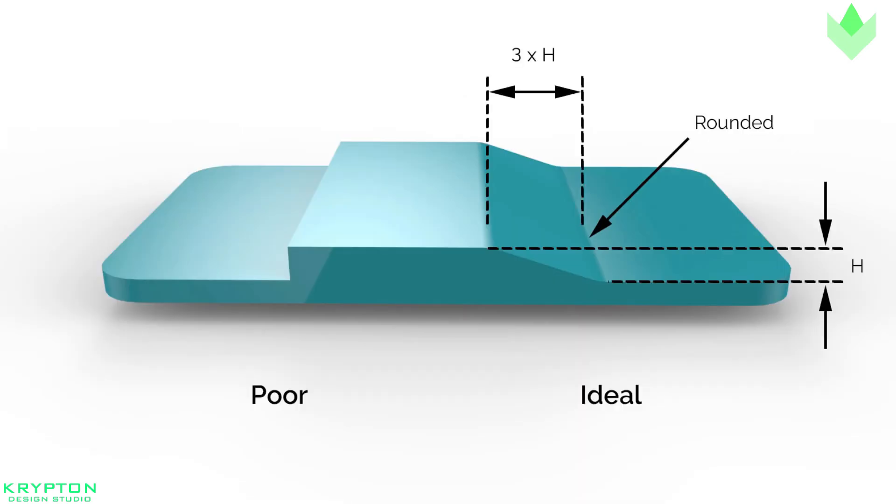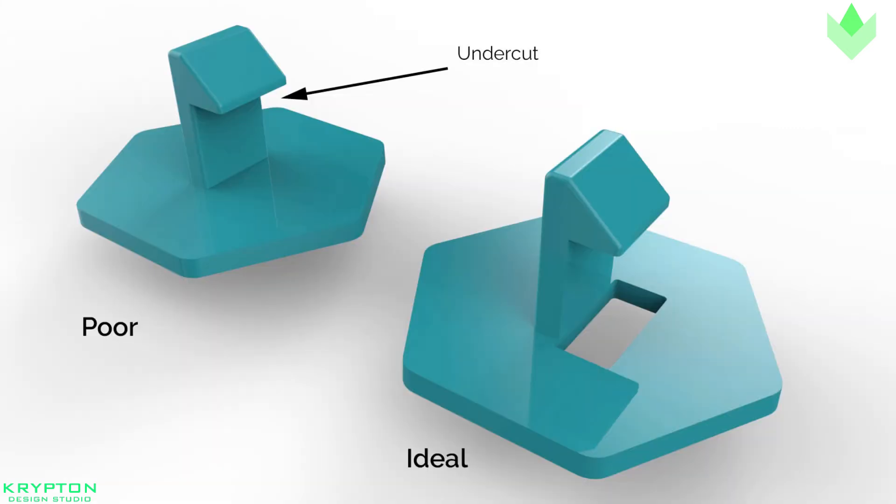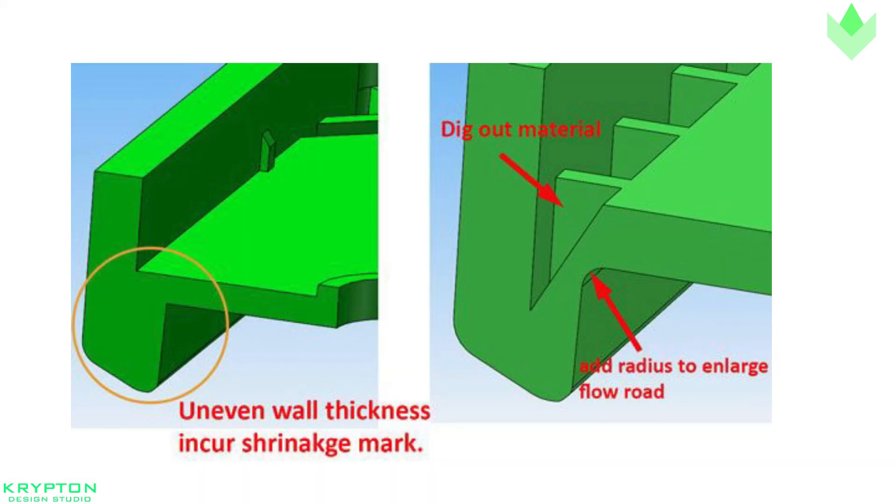When uniform walls are not possible, then change in thickness should be as gradual as possible. Wall thickness variation should not exceed 10% in high mold shrinkage plastics. Thickness transition should be made gradually or in order of 3 to 1. This gradual transition avoids stress concentrations and abrupt cooling differences.